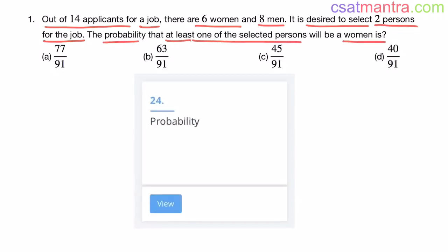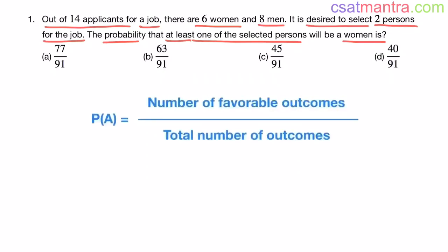This question is from the probability chapter. You may expect one to two questions from this chapter. Probability of event A equals the number of favorable outcomes by total number of outcomes.